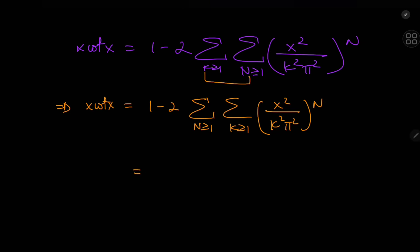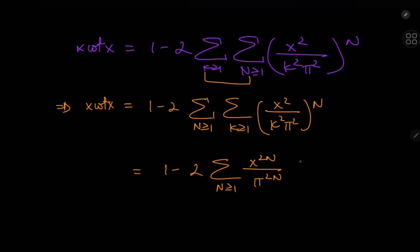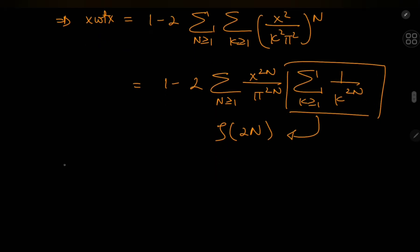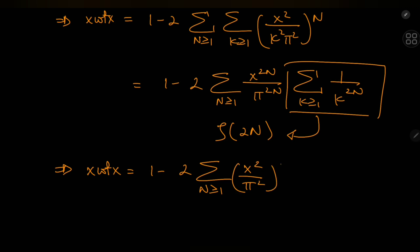The first sum is carried over the k variable, so I can factor out everything independent of k. That gives 1 minus twice the double sum over n and k of (x^(2n)/π^(2n)) times the sum over k of 1/k^(2n). We recognize this beautiful structure as the Riemann zeta function evaluated at 2n. So this all implies that x·cot(x) equals 1 minus twice the sum over n of (x²/π²)^n times ζ(2n).